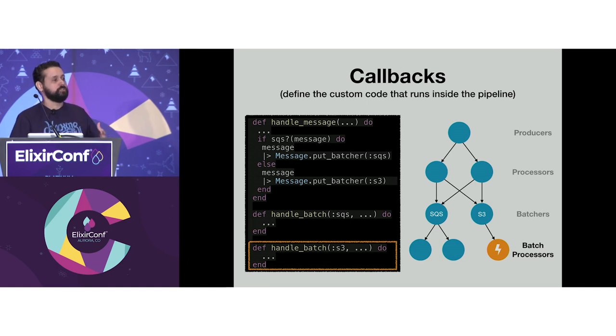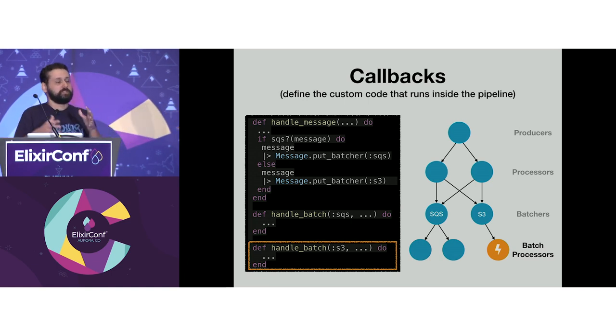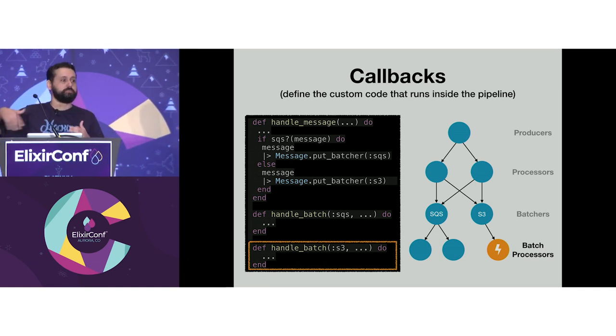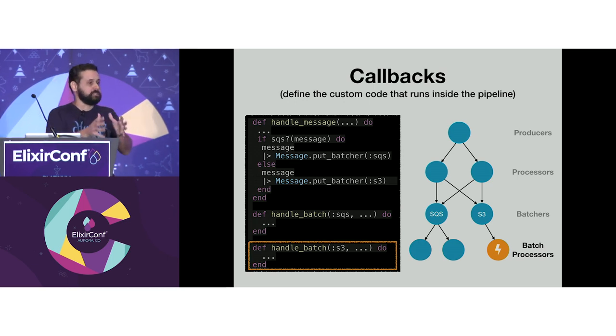This is important to note: you cannot have state in Broadway. It's not like a GenServer where you have state — you cannot and shouldn't have state here.